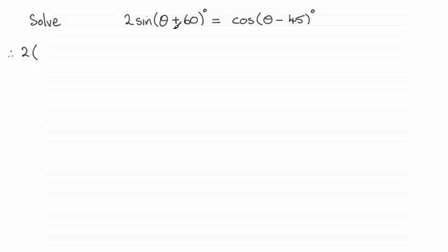So for sin(a + b), we've got sin a (that's θ) times cos b (that's cos 60°), plus cos a (that's cos θ) multiplied by sin b (sin 60°).